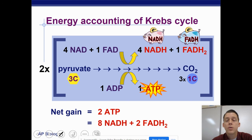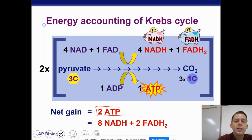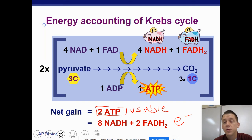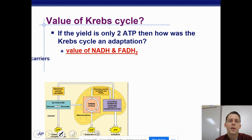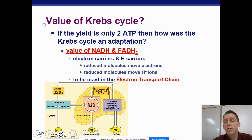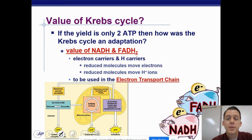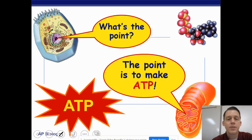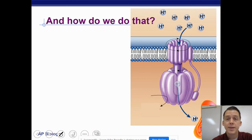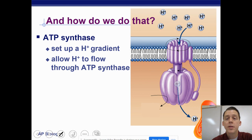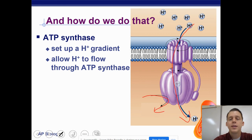The net gain for the Krebs cycle, including the oxidation of pyruvate, is eight NADH and two FADH2 plus two ATP. So we have readily usable energy — the energy of electrons — produced by the Krebs cycle. It is the value of the NADH and FADH2 that makes the Krebs cycle worth doing, and those two things are going to be used in the electron transport chain. The whole point is to eventually make lots and lots of ATP, which we do by utilizing ATP synthase — hydrogen ions flow through the ATP synthase, which turns to make ATP.